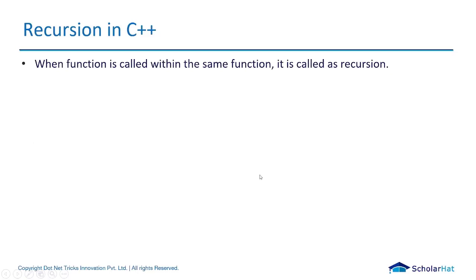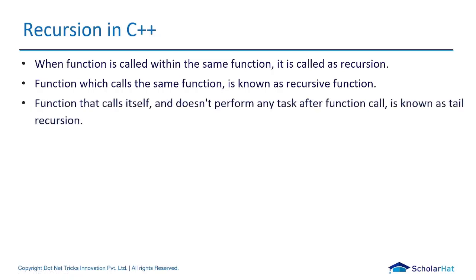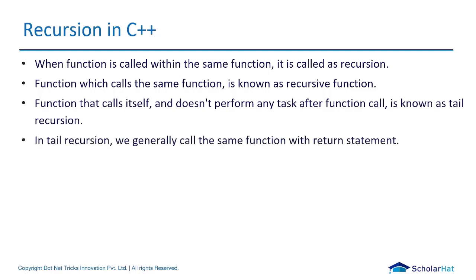We will move to recursion in C++. When a function is called within the same function, it is called recursion — it means a function calling itself again and again. A function which calls itself is called a recursive function. A function that calls itself and does not perform any tasks after the function call is known as tail recursion. In tail recursion, we generally call the same function with a return statement.